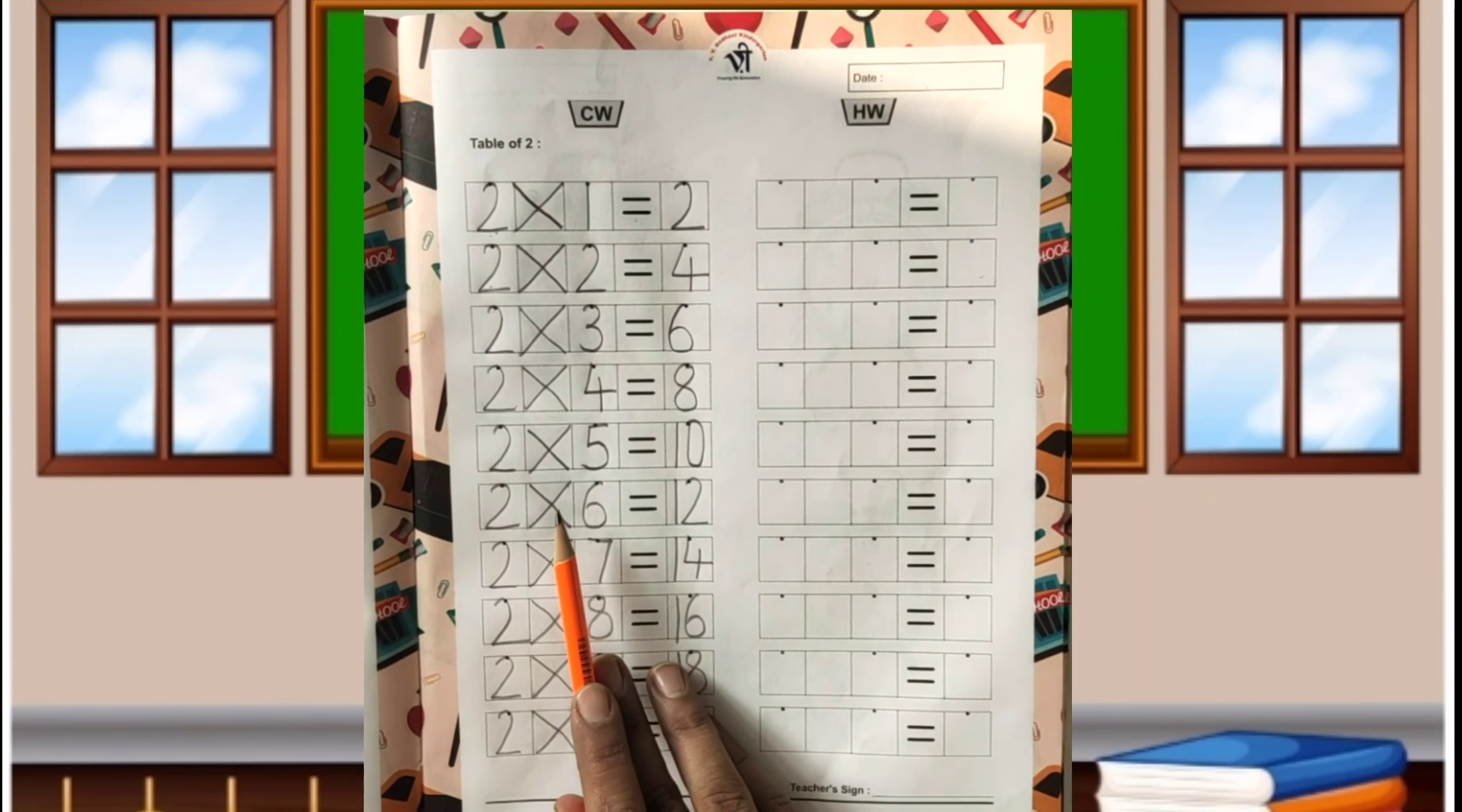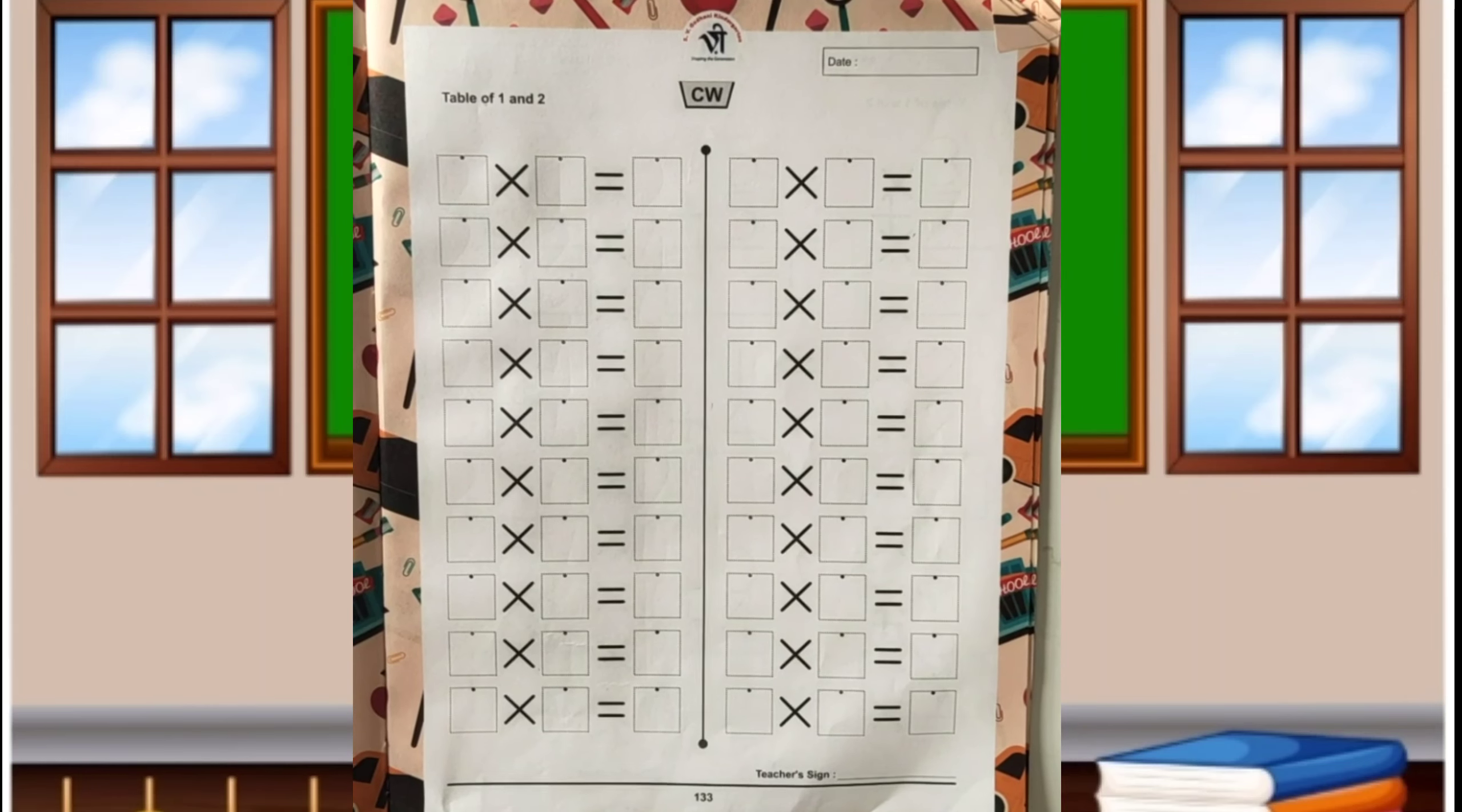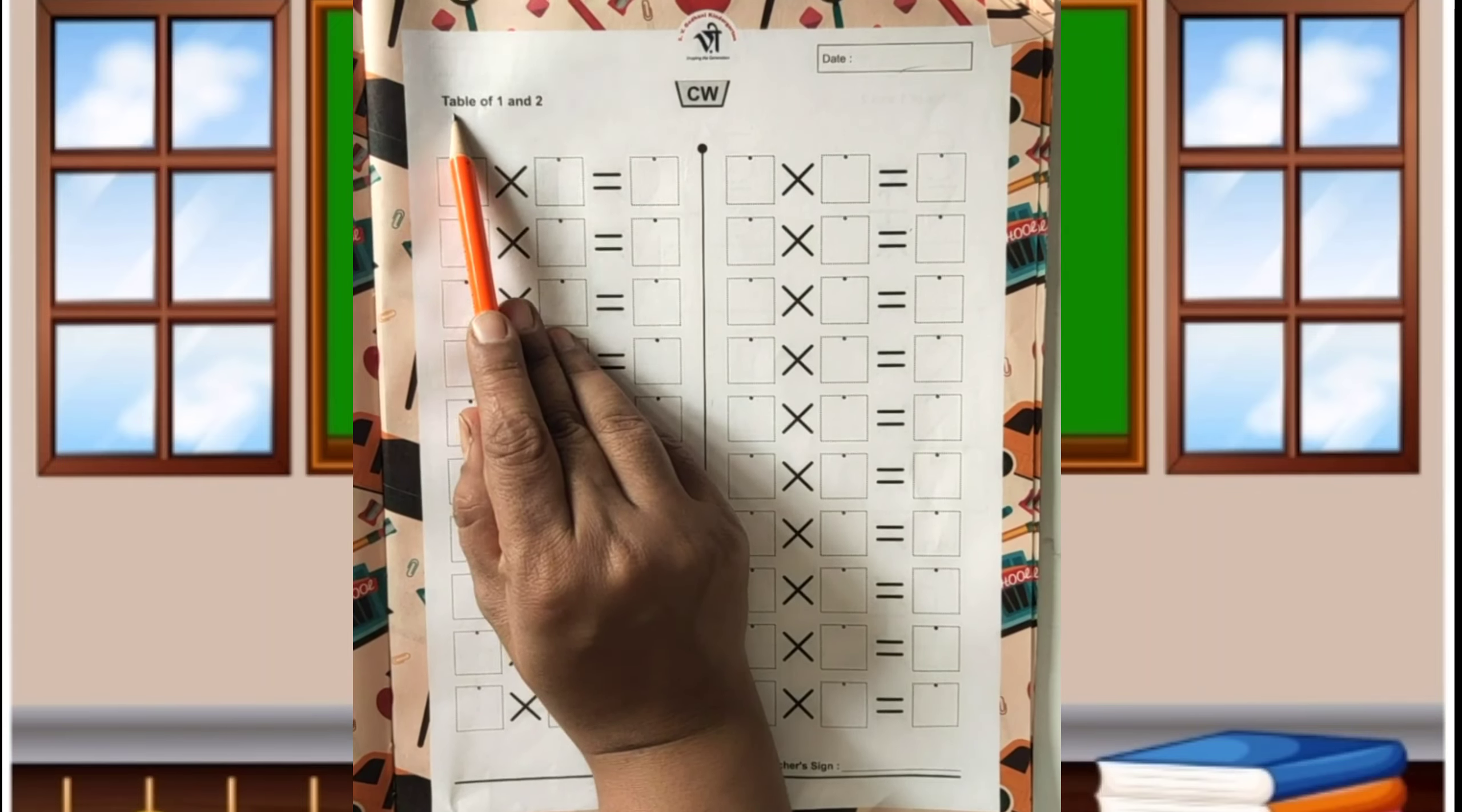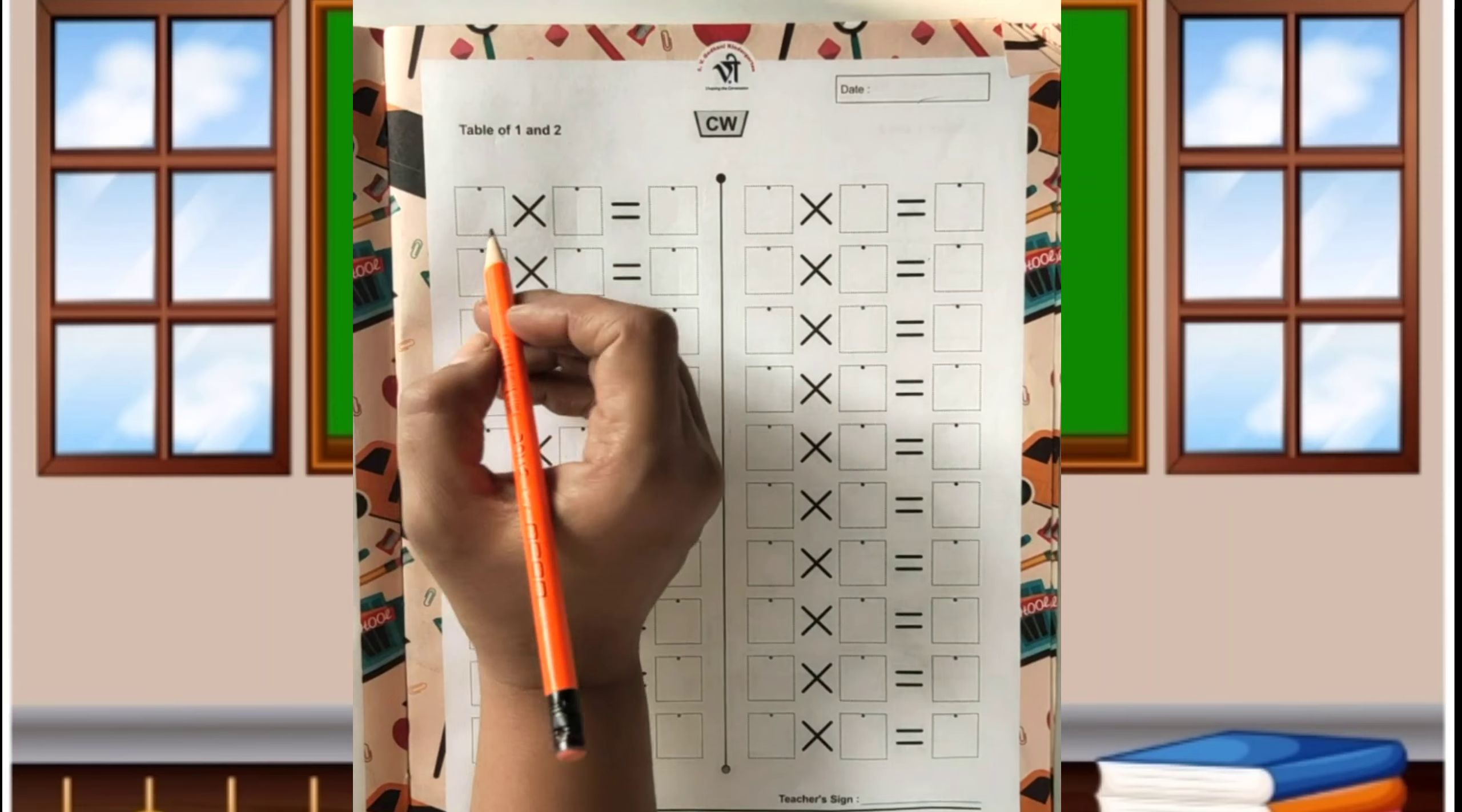This way, you have to complete the next box, table of 2. Now, page number 133. Jump to page number 133. Write down date over here. Write table of 1 and 2. We already learnt table of 1 and 2, so this is revision based.